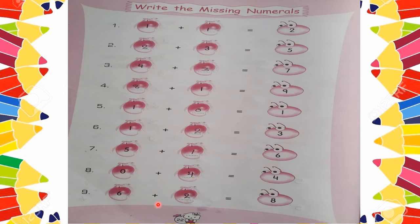Next: 6 plus space is equal to 8. Start counting from 6: 7, 8 — we increased 2 digits. So here we write 2. 6 plus 2 is equal to 8. Clear class? That's how we do this question.